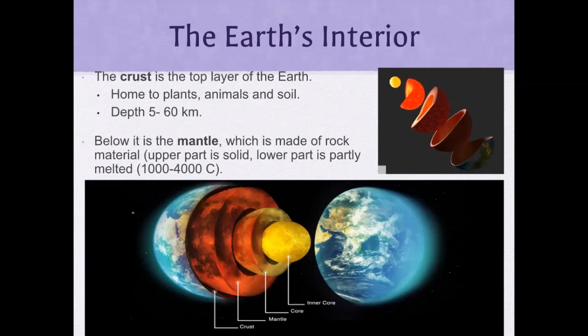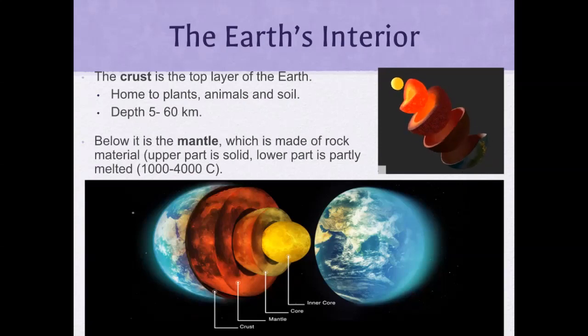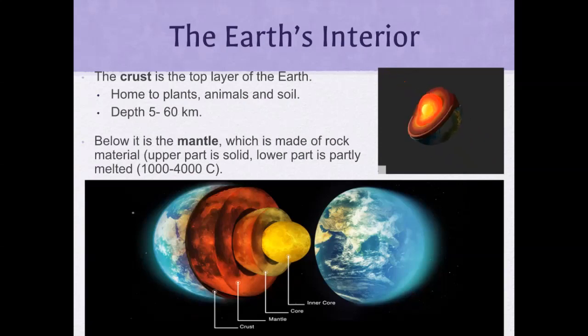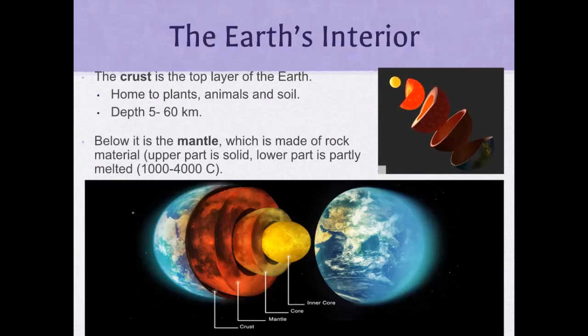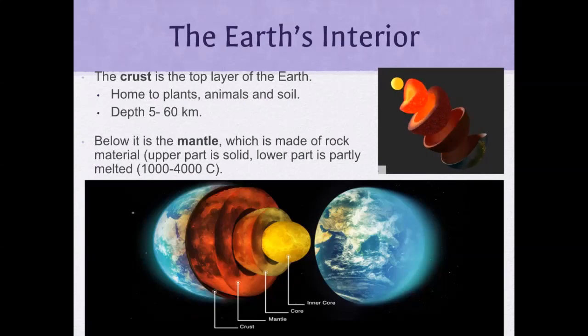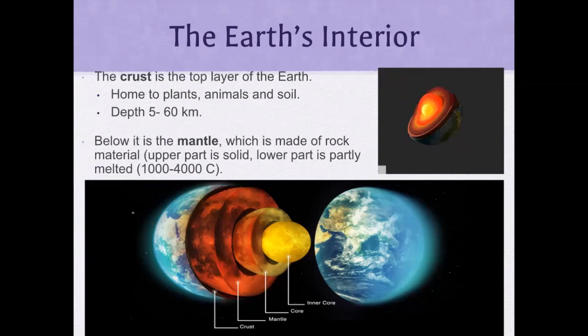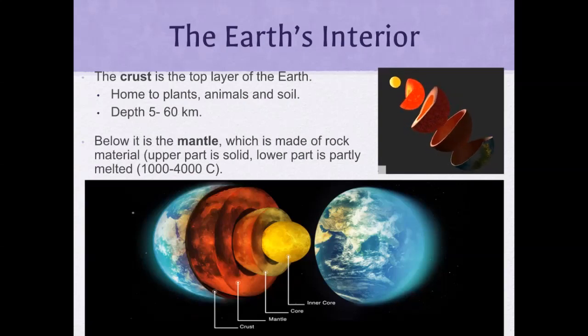Below the crust is the mantle, which is the second layer. It is made of rock material — the upper part is solid, whereas the lower part is partly melted and can be anywhere from 1,000 to 4,000 degrees Celsius.